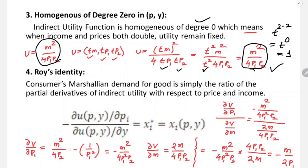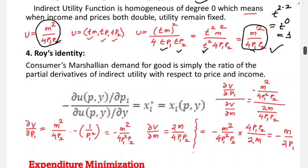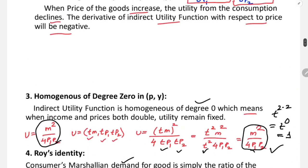The next property is Roy's Identity. Roy's Identity states that the consumer's Marshallian demand for goods is simply the negative ratio of the partial derivative of the indirect utility with respect to price, divided by the partial derivative with respect to income.